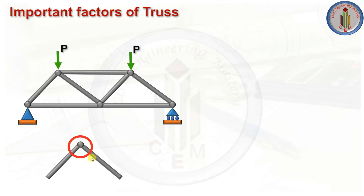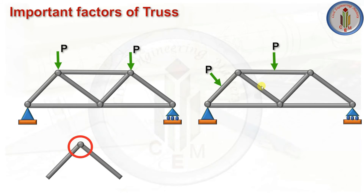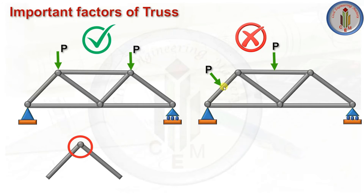Truss members are connected to each other using frictionless pins. When two members are joined together, one has the freedom to rotate relative to the other. Because of this, truss joints cannot resist any bending moment — neither the joints nor the members are designed to carry any bending moment. The truss must be loaded only at joints, not on the members. If a member is loaded directly, it would behave like a beam, making it a frame rather than a truss.